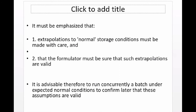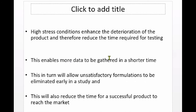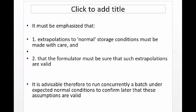By increasing these high stress conditions you increase the rate at which degradation takes place, which enhances deterioration and reduces the time required for testing. For example, you might expose the product to degradation at three high temperatures — 80, 90, and 100 degrees Celsius — then use that data to extrapolate how the product will behave at a storage temperature such as 25 degrees Celsius. Extrapolations to normal storage conditions must be made with care and reasonable assumptions.